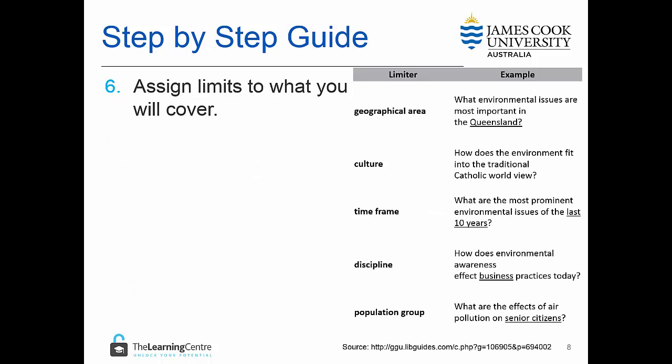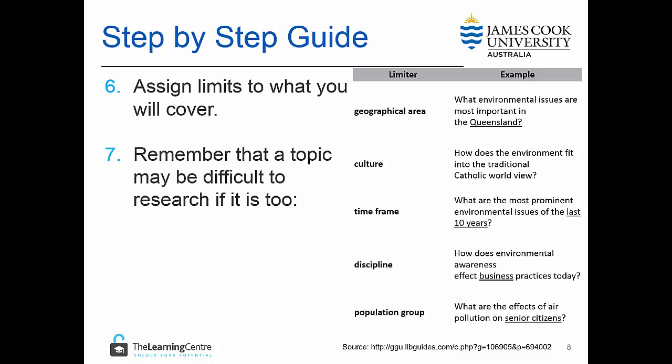The next step is to assign some limits to what you will cover. These could be things like a geographical area, a culture, a timeframe, a discipline, or a population group — they allow us to narrow the scope of our research so it's not too big. However, it's important to remember that a topic may be very difficult to find research about if it is too locally confined. For example, you may find research about a topic Australia-wide, but you might not find anything located only in Townsville.